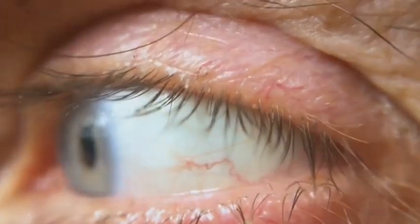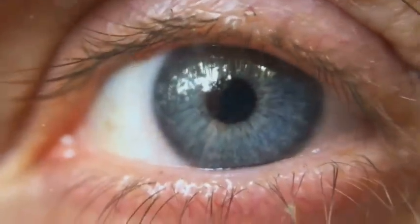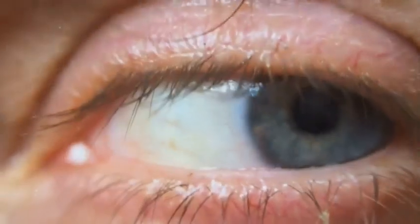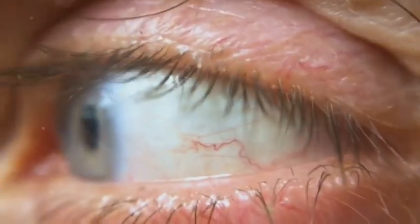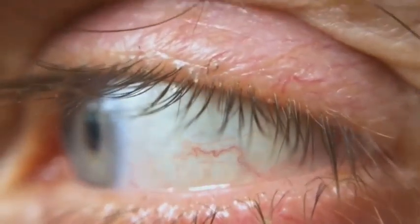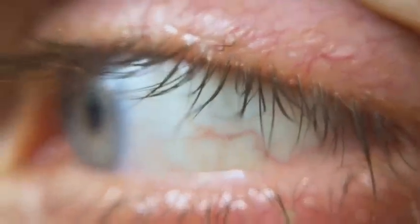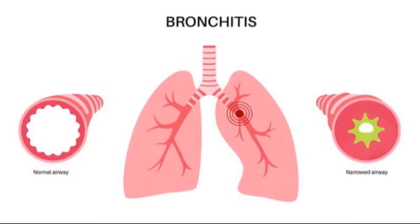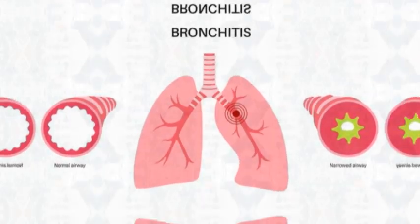Dermal contact mainly causes skin and eye irritation, while injection can lead to localized muscle and lymph node failure and potentially widespread organ failure and death. Additionally, inhalation may also result in bronchitis and acute lung injury, and ingestion can lead to gastrointestinal hemorrhage and severe metabolic disturbances.